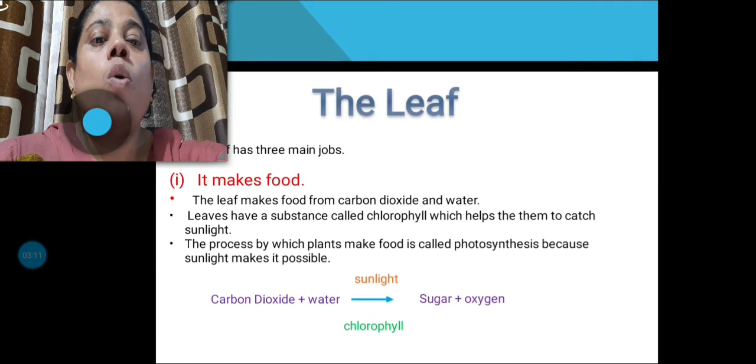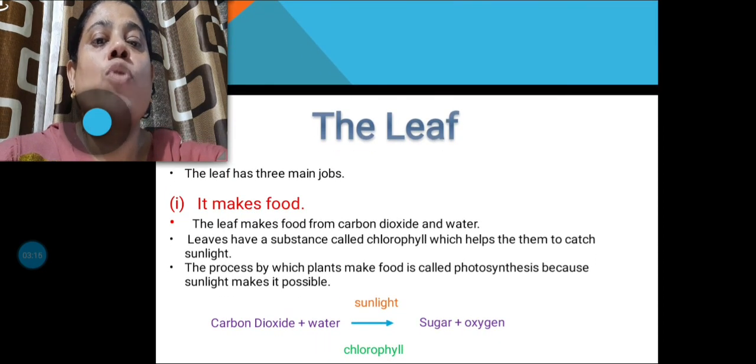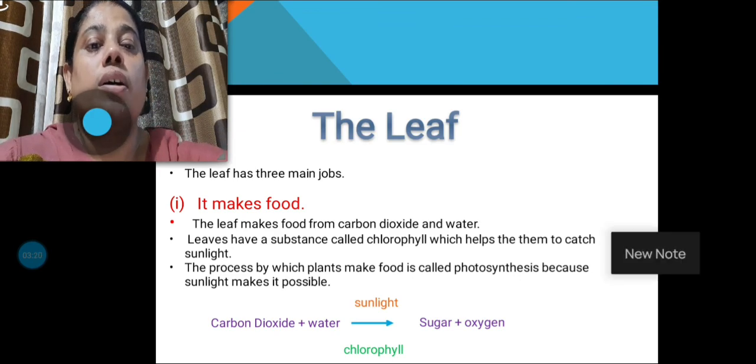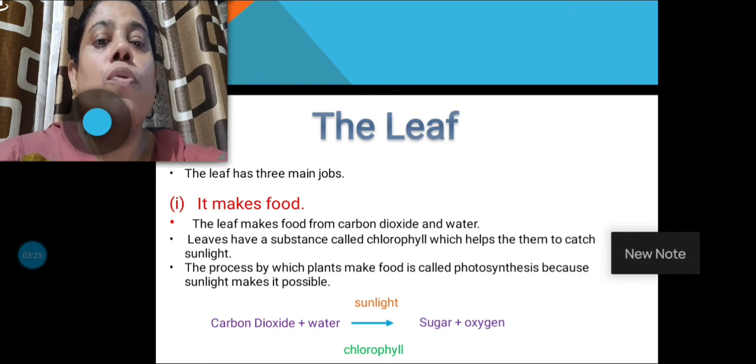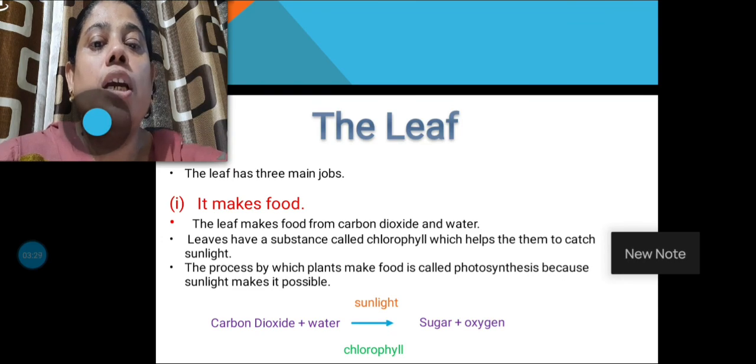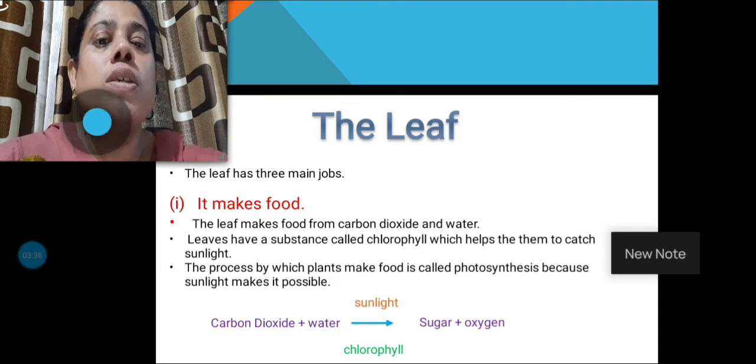Now, about the leaf. The leaf has three main jobs. It makes food. The leaf makes food from carbon dioxide and water. Leaves have a substance called chlorophyll which helps them to catch sunlight. The process by which plants make food is called photosynthesis because sunlight makes it possible.